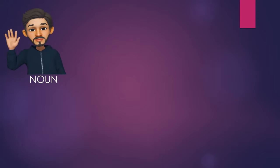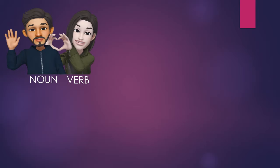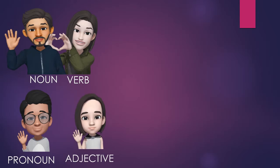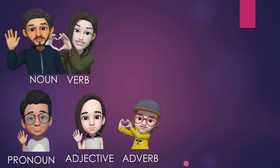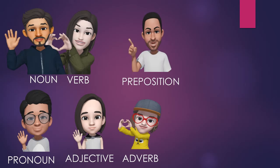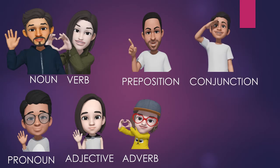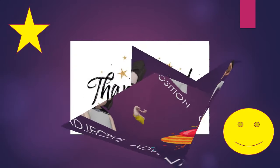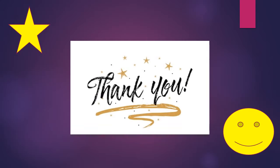Shall we have a recap of all these things? Noun is a word used as a name of a person, place, or thing. Verb is a word used to express an action or state. Pronoun is a word used instead of a noun. Adjective is a word used to add something to the meaning of a noun. Adverb is a word used to add something to the meaning of a verb. Preposition is a word used to show a relationship between two words in a sentence. Conjunction is a word used to join words or sentences together. An interjection is a word which expresses some sudden feeling. Hope you all understand all the parts of speech and can easily remember all these things.